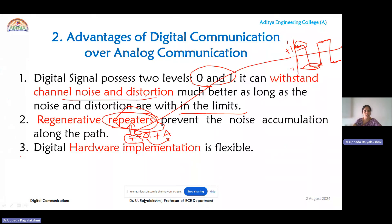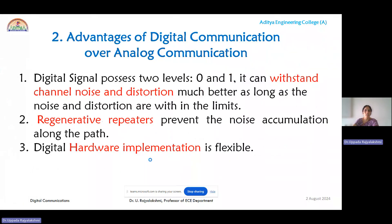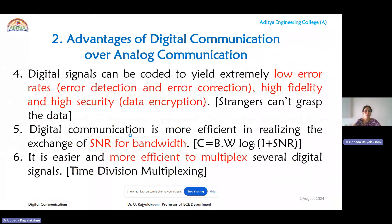The third advantage is that hardware implementation is flexible as well as feasible for digital signals when compared to analog. The fourth advantage is that the source encoder and channel encoder, elements of the digital communication system, convert the analog signal into a binary stream, effectively encrypting the data. Using convolutional codes or block codes as channel encoding techniques, we can detect and correct errors.